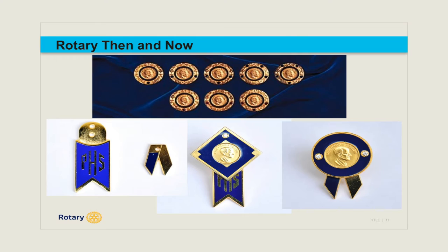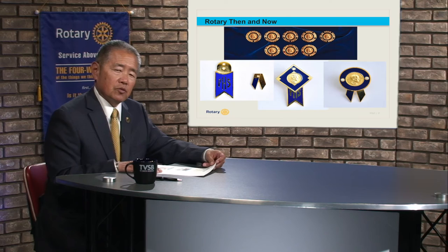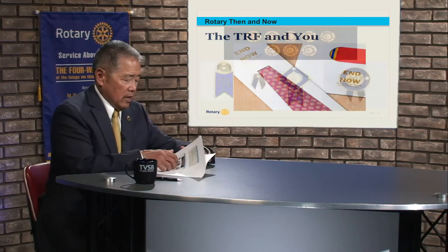The ribbon on the left is the Paul Harris Society ribbon, worn with one of the medals or pins, representing a pledge to give $1,000 a year to the Rotary Foundation. The small triangle ribbon is the benefactor ribbon, given to someone who has pledged $1,000 through their estate. The square in the center is a major donor level one — $10,000 recognized with the Paul Harris Society. And on the right is a circle with two diamonds — I'm told they are actual diamonds — which is a bequest society level two, representing a $25,000 pledge through your estate.